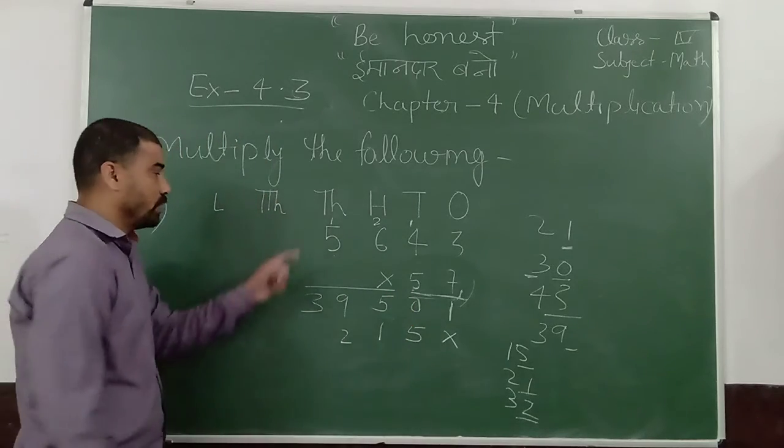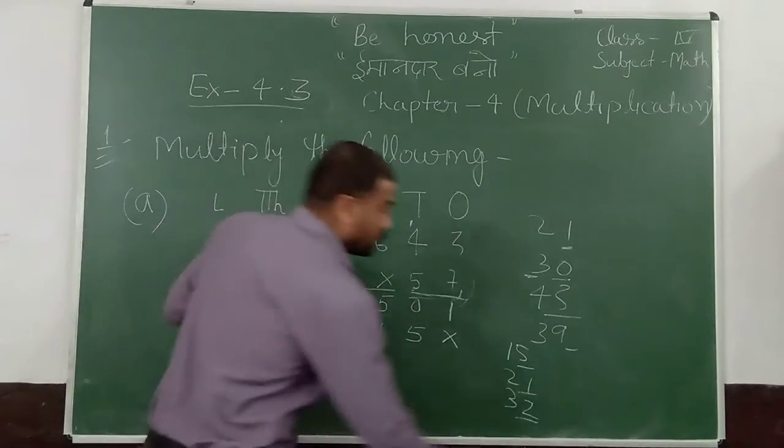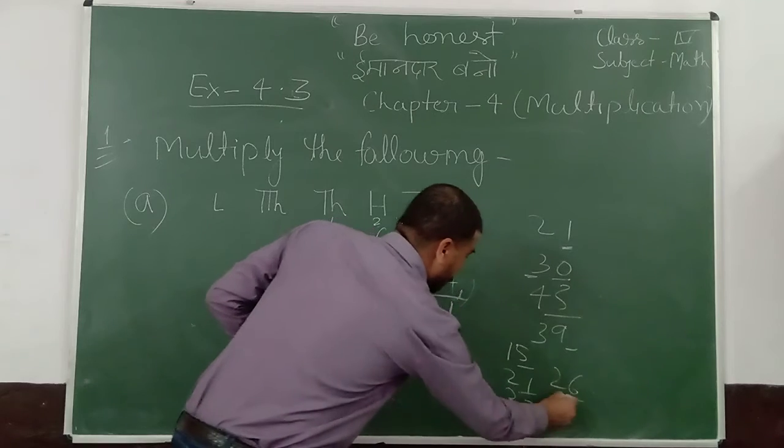5 into 5, 25. 25 plus 3 is 28. So put 28.